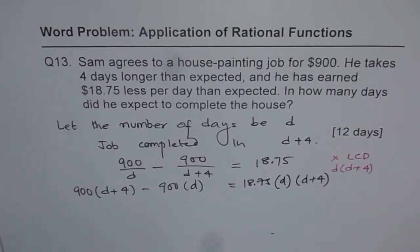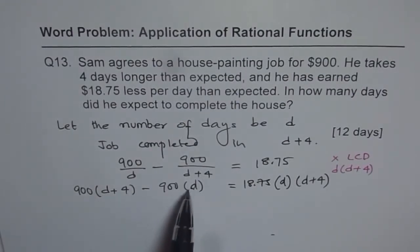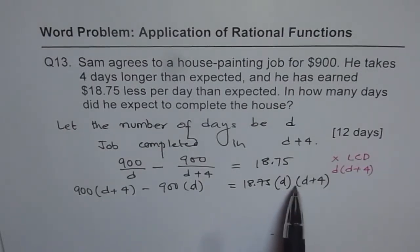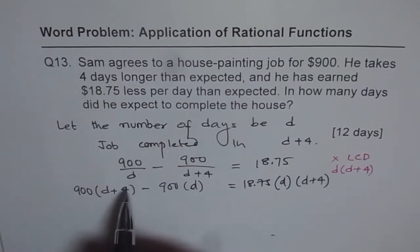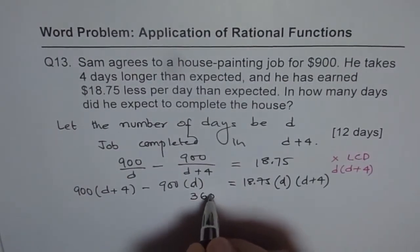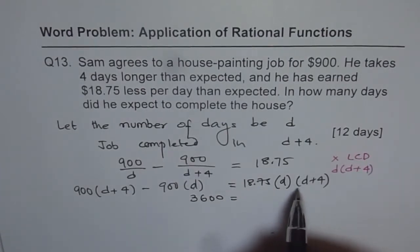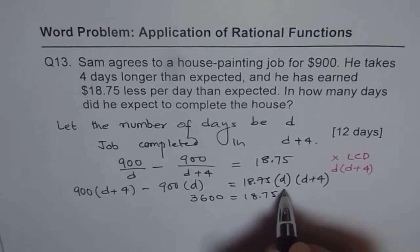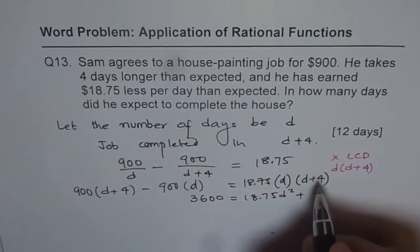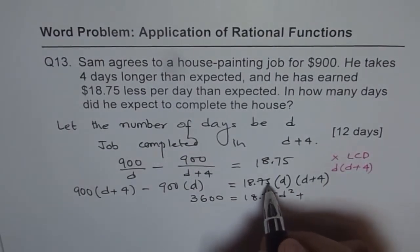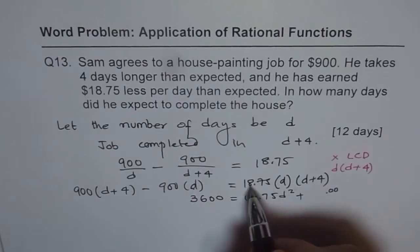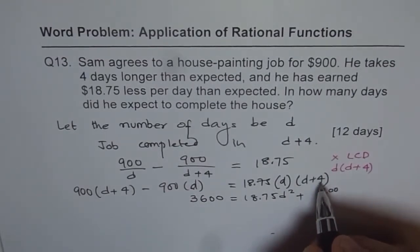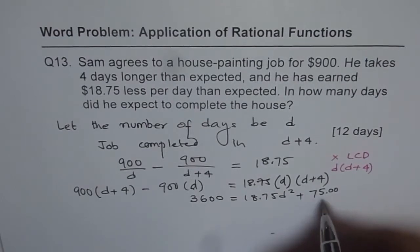And that leads to a quadratic equation. Remember here, 900D, 900D actually gets cancelled. So you only get 4 times 900 on the left side. Expand this, bring them all together. So it is 4 times 900, that means 3600 on the left side. And then you can just multiply these. So you get 18.75 D squared plus 4 times this. So 4 times 5 is 20, 4 times 7 is 28, 33, 4 times 8 is 32, 3, 5. And 3 is there. So 75 D.